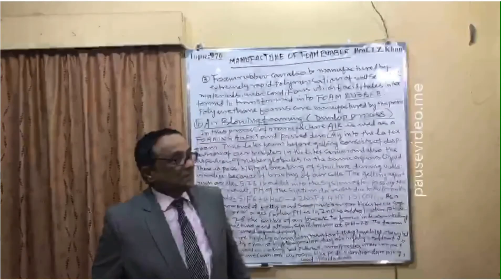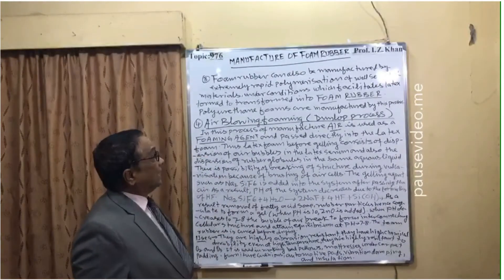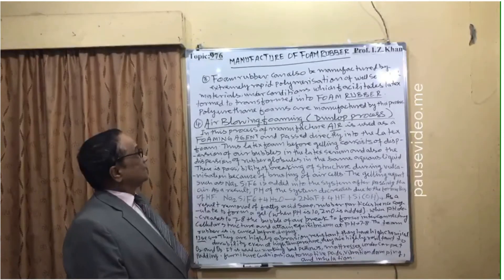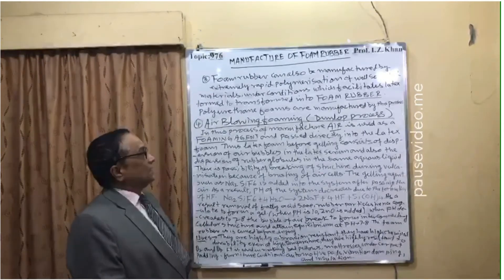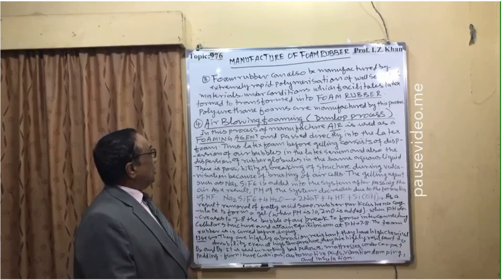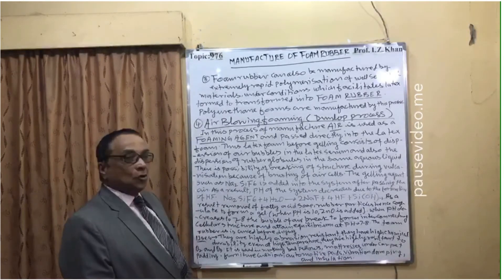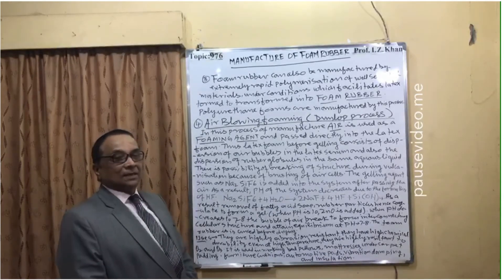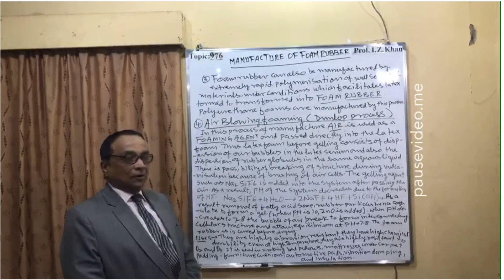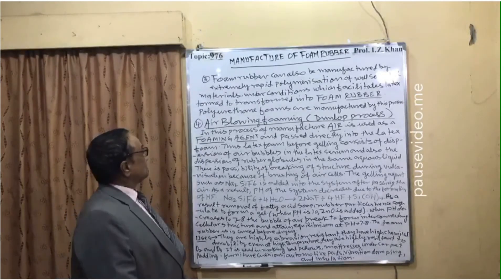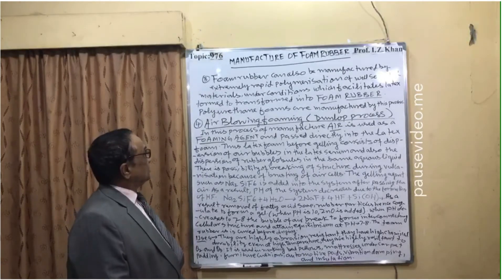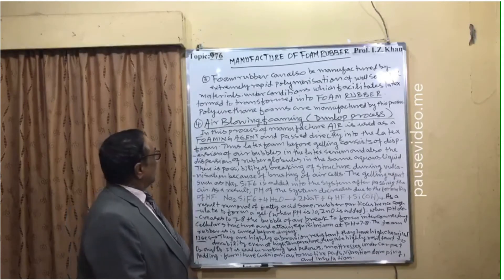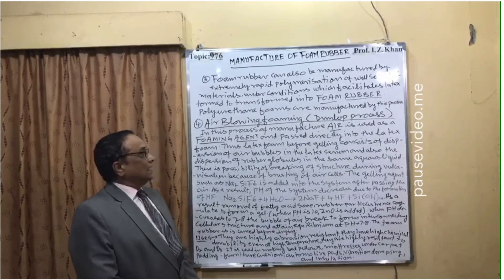Foam rubber can also be manufactured by extremely rapid polymerization of well-selected materials under conditions which facilitate the latex to transform into foam rubber. By using selected materials with extremely rapid polymerization, we can also form foam rubber. By this method, polyurethane foams are manufactured in industries.